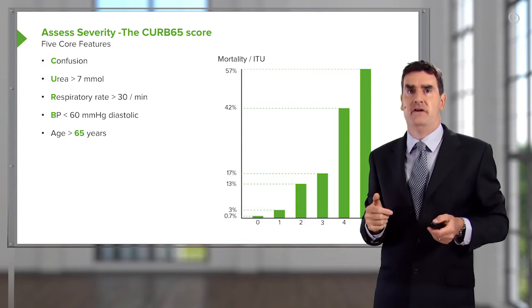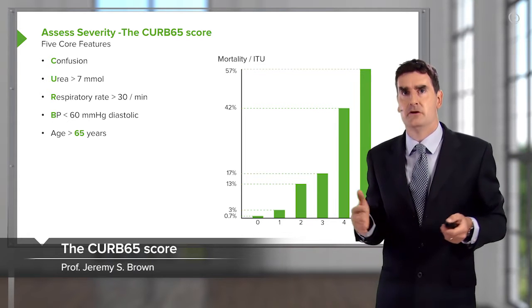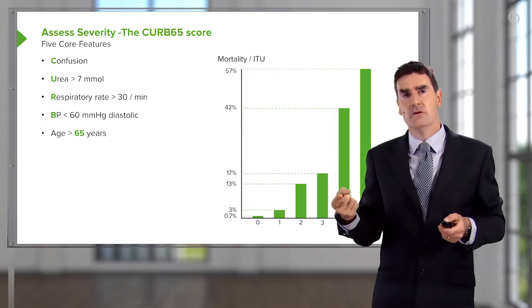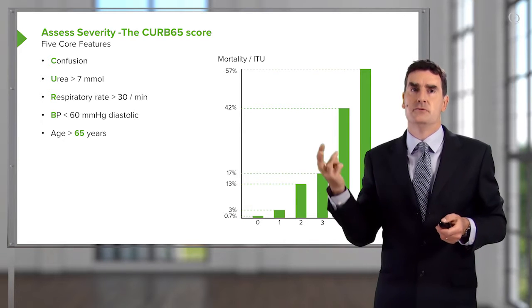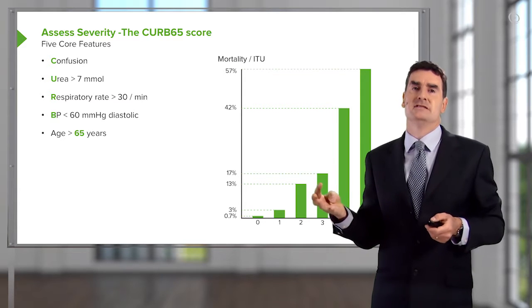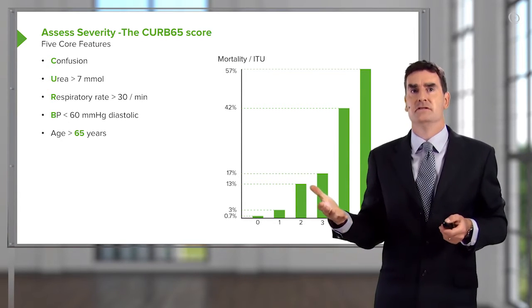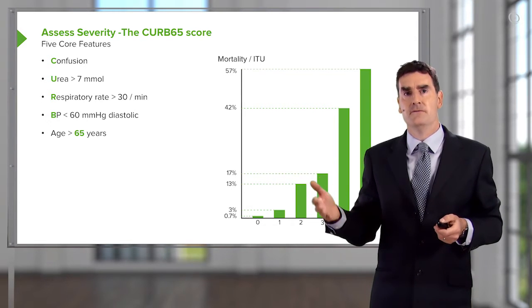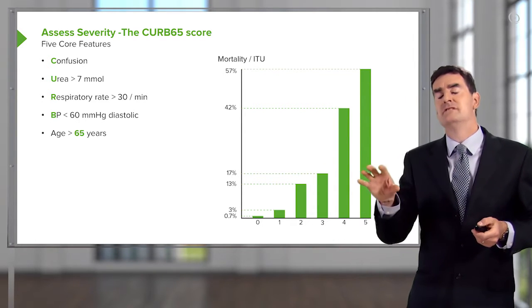Management: how do we assess the severity? This is largely done using a score called the CURB-65 score. It takes five factors: confusion — whether it's present or not; urea — whether it's greater than 7 or not; respiratory rate — whether it's greater than 30 or not; blood pressure — whether the diastolic is less than 60 or not; and whether the patient is over 65 years of age. That gives you a six-point score: 0, 1, 2, 3, 4, or 5.